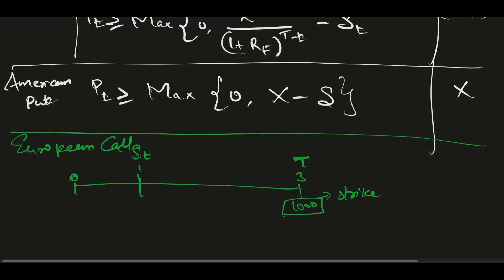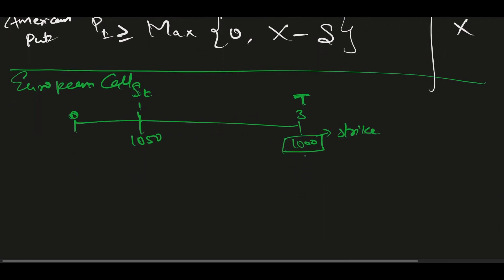Since this is a European call, you cannot exercise it immediately — it can only be exercised on the expiry date. So if you immediately exercised, the value would be 1050 minus 1000 equals 50, but you cannot. When you want to square off, you have to take the present value of the 1000 strike.